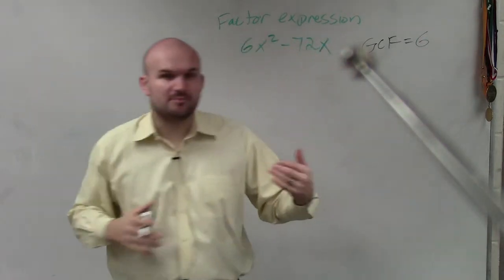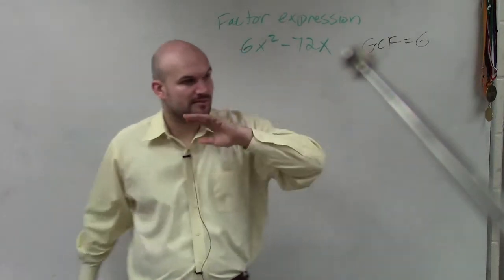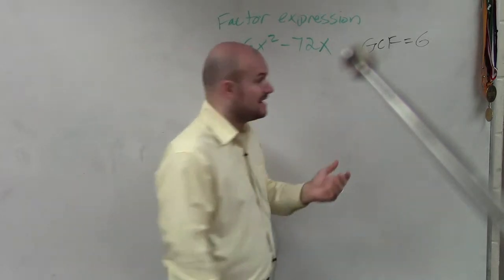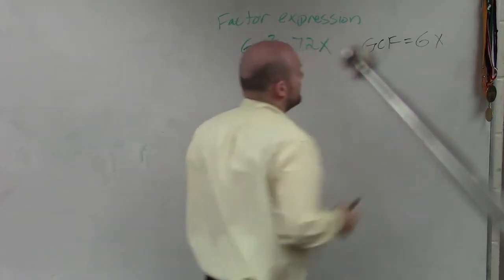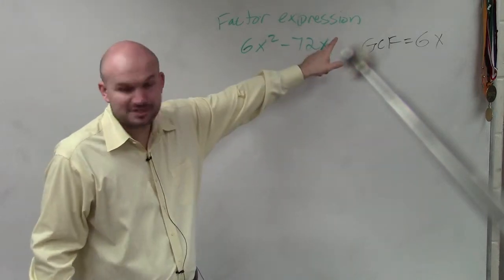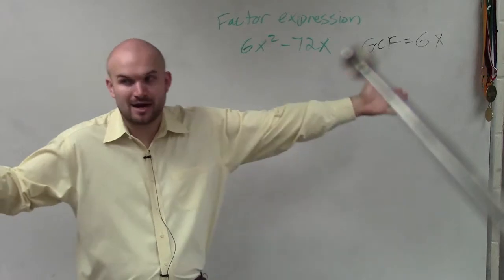And then what is the largest variable, the variable to the highest degree or power that divides into both of them? It's x, just x. Because x is obviously the lowest of our two powers. X to the first is obviously our lowest, right? So you can't divide anything in a higher power into x.